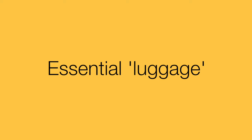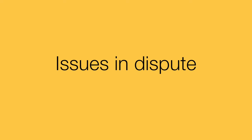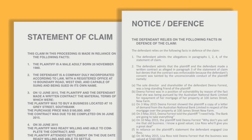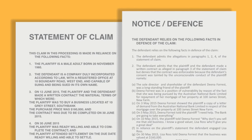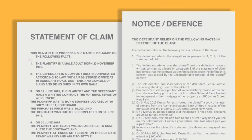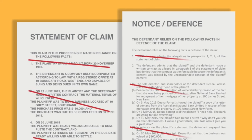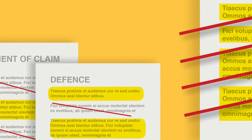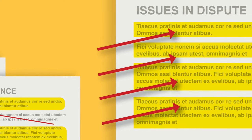So firstly, how do you decide what is the essential luggage? Well, it's the luggage which connects the issues you are actually arguing about. These are known as the issues in dispute. To decide what issues are in dispute, look at all the documents filed so far. They make pairs or sets like this. The first pair is the statement of claim and the defense. If an allegation in the statement of claim has been admitted in the defense, then you are not arguing about that issue so it's not in dispute. Go through each allegation in a copy of the statement of claim and cross out the ones which have been admitted in the defense. Everything that is left is still in dispute.